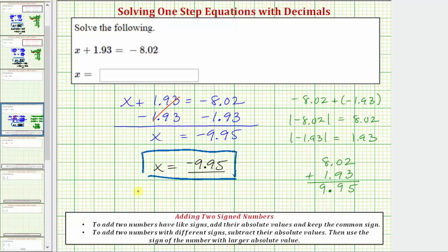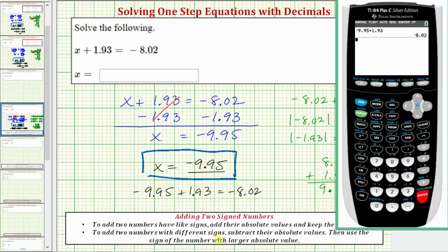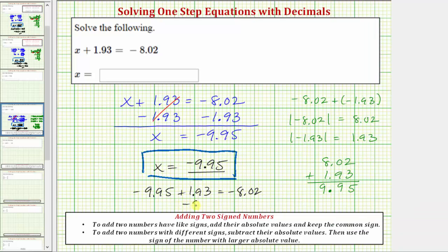Performing the substitution, we would have negative 9.95 plus 1.93 equals negative 8.02. Let's go ahead and check this sum on the calculator. Notice how we do get negative 8.02, which verifies our solution is correct. The left side equals negative 8.02, and so does the right, which is our check. I hope you found this helpful.